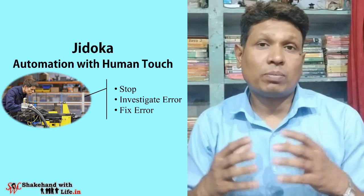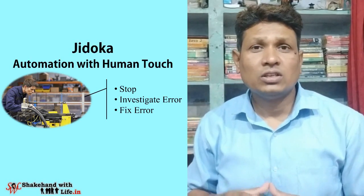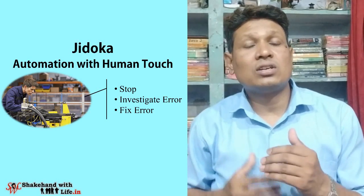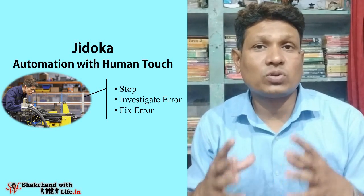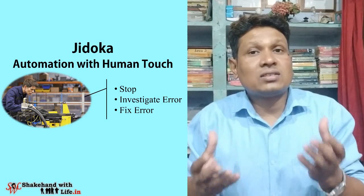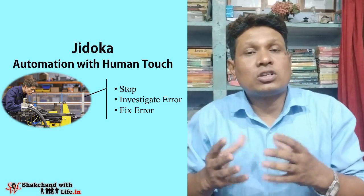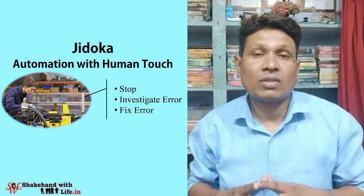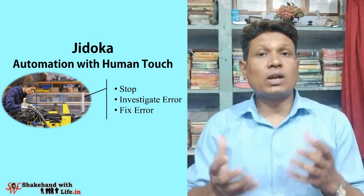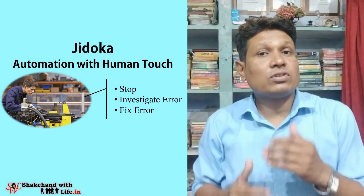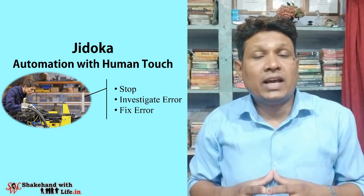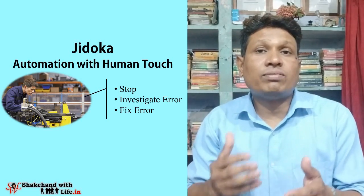The second pillar of the Toyota production system is Jidoka. Jidoka means automation with human touch. It is a principle that creates control of defects inside a business process — it demands that a process stops itself as soon as errors are detected so that improvements or troubleshooting can happen immediately. Machines are equipped to recognize bad outputs from good ones, and human interaction is required when the machine cannot control the defects itself.